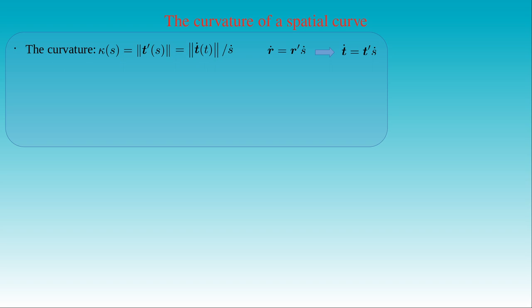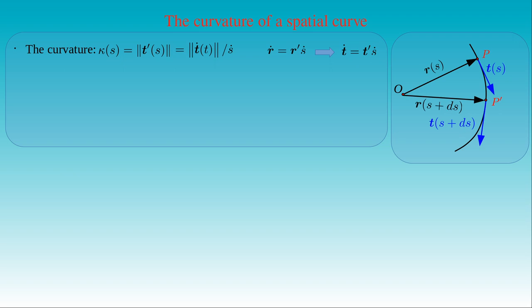In this figure, we can see a spatial curve with position vector r(s) pointing from the reference point O to the point P on the curve, using the arc length s as the parameter. The tangent T at P depends on the arc length as well. Let us consider the point P' at distance ds from P along the curve; its position vector r and tangent T are evaluated at s plus ds. The direction and length of the tangent vectors can differ at the two points for general spatial curves. If we translate the tangent from P to P', we can measure the angle phi between the tangent at P' and the translated vector, and denote the difference of these two vectors as delta T.